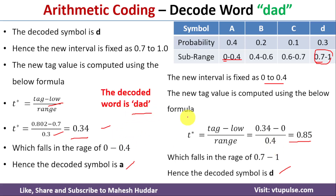This is how we can encode and decode the word DAD using arithmetic coding. I hope the concept of arithmetic coding is clear. If you like the video, do like and share with your friends. Press the subscribe button for more videos and the bell icon for regular updates. Thank you for watching.